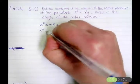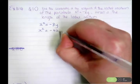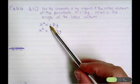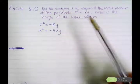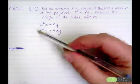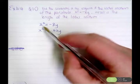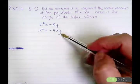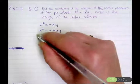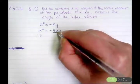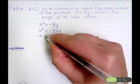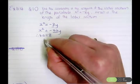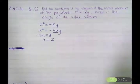This is of the type x squared equals negative 4ay. We know that because of the negative sign in front of the 8. So comparing both equations, the 4a term is equal to 8, therefore our focal length a is 2.